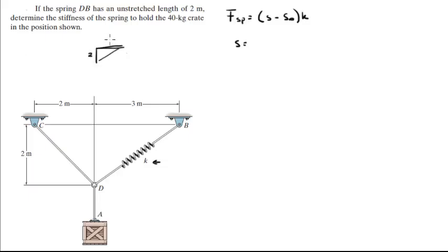This triangle has a height of 2 and a length of 3. To find this distance S, I'll use the Pythagorean Theorem, so that would be 2 squared plus 3 squared.